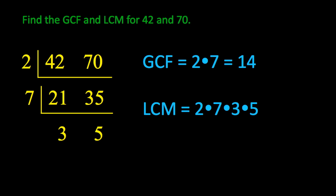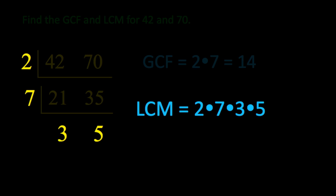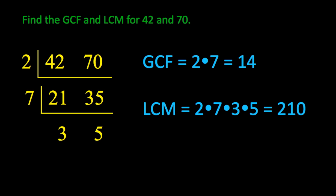So, we tack on the 3 and the 5 to create our lowest common multiple. So, our lowest common multiple is the 2 times the 7 times the 3 times the 5 for 210.